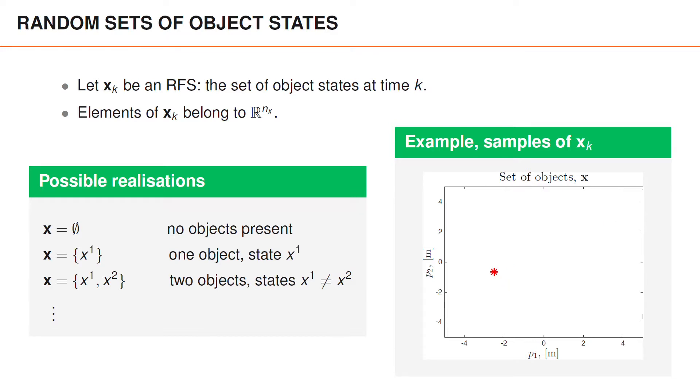As you can see, the set sometimes contains two vectors and sometimes one, and the vectors appear in the regions where we suspected that there may be objects. This is an illustration of what we have in mind when we say that both the number of elements and the elements themselves are random.